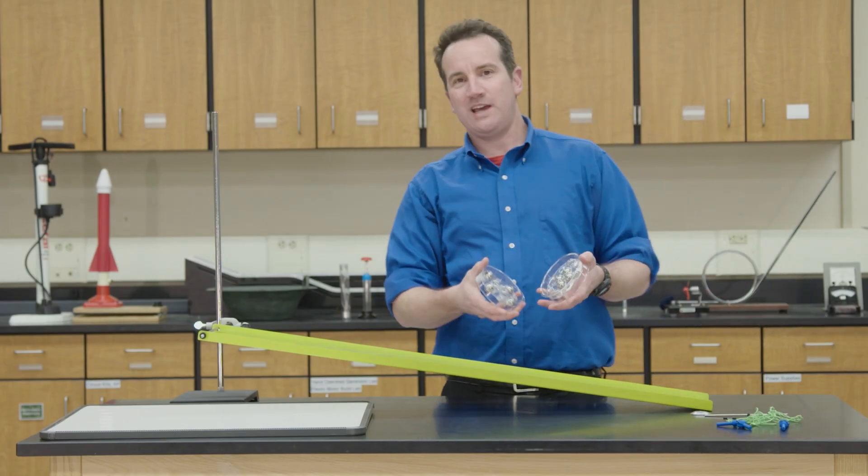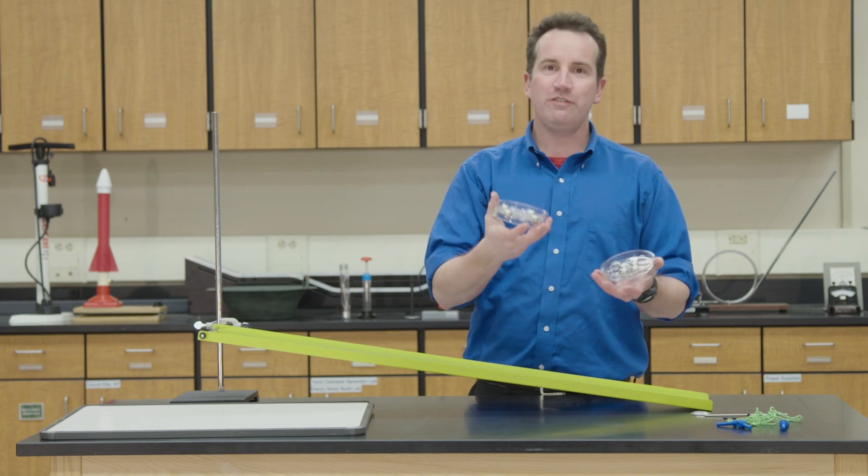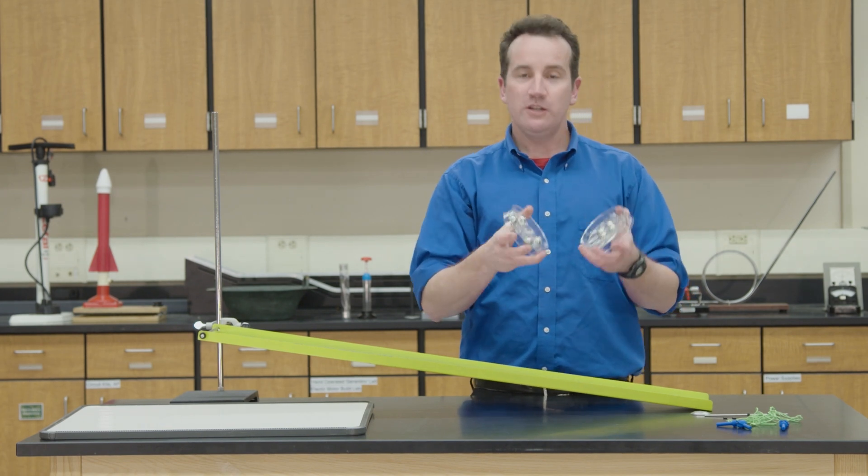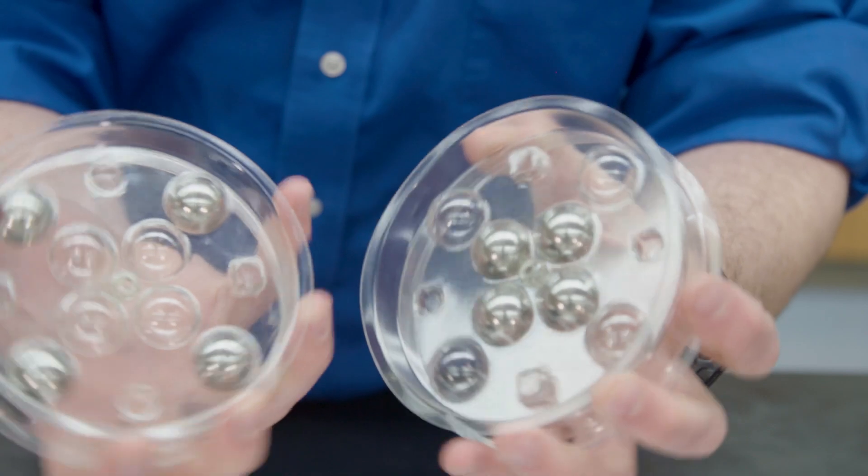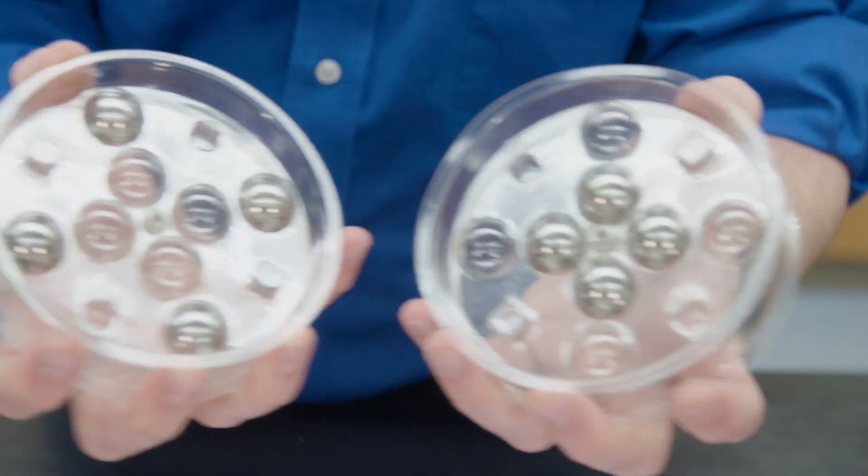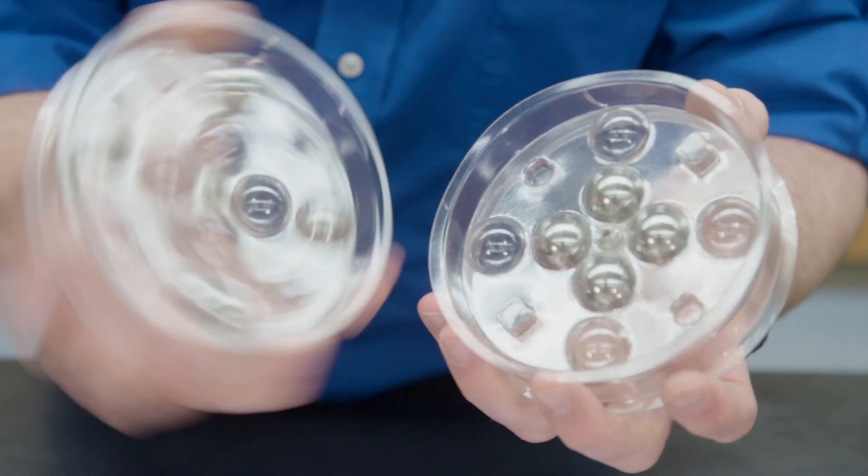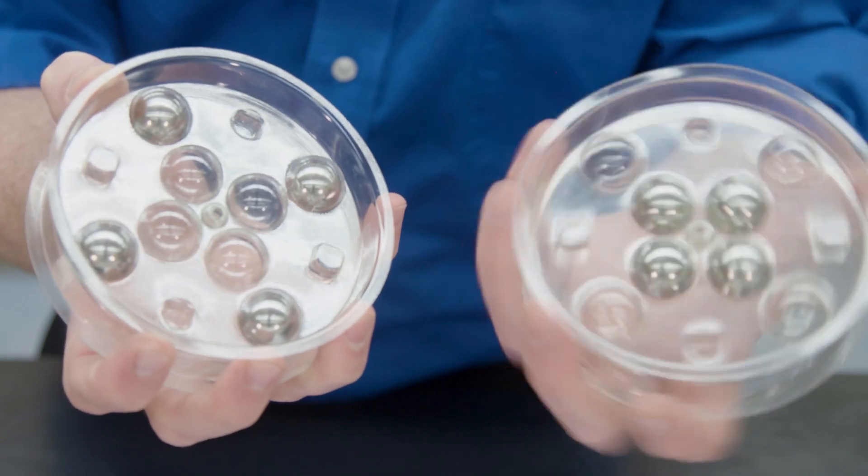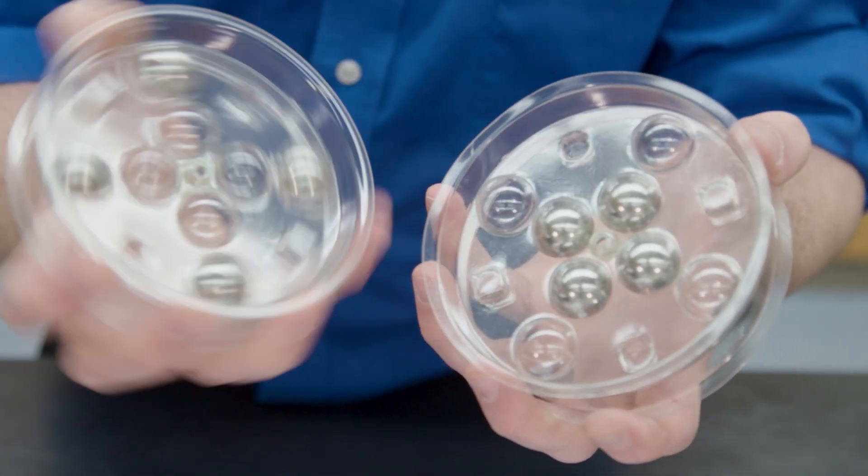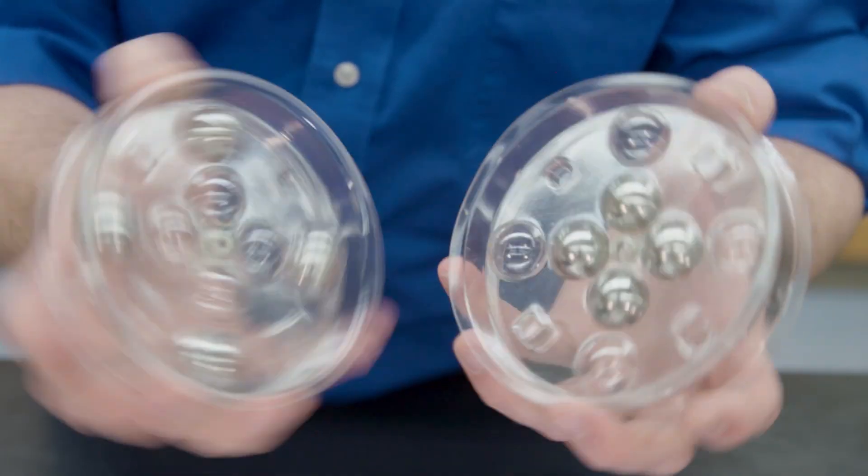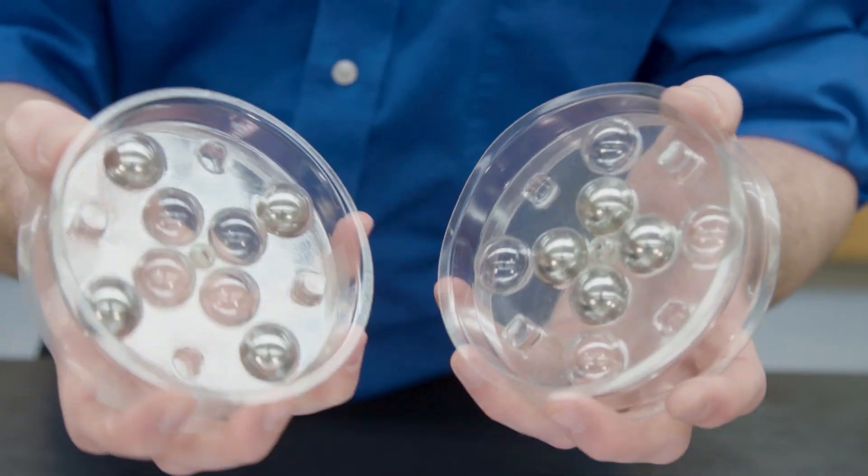But why does this happen? Well, if you hold the discs in your hand and spin them, you can immediately understand why. By spinning them at the same time, you begin to feel that the center-weighted disc is easier to spin than the outer-weighted disc. This is because it takes more work to move the one who has the masses further out.